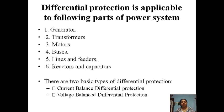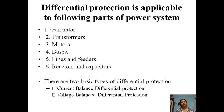Differential protection is applicable to the following parts of the system: generators, transformers, motors, buses, lines and feeders, reactors, and capacitors. There are two basic types of differential protection — based on the current balance principle and based on the voltage balance principle.